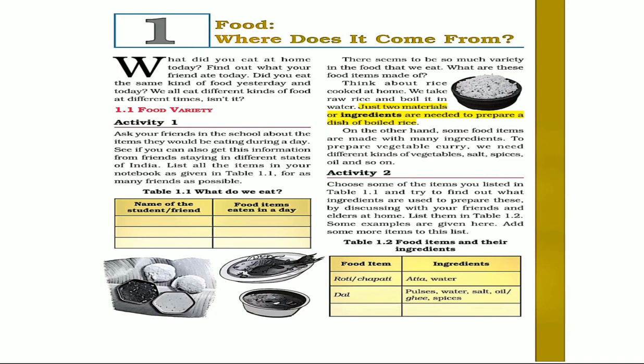We buy food and there are so many different types of meals — all variety of things. We eat many different foods. So this is section 1.1: Food Variety.